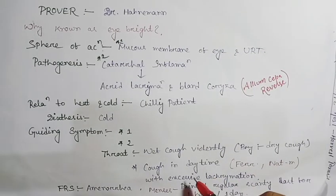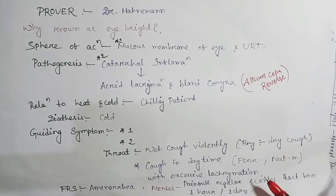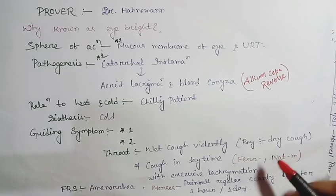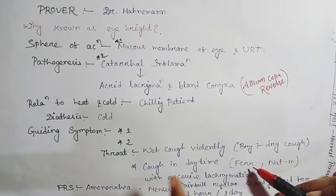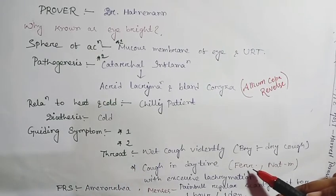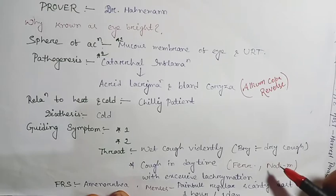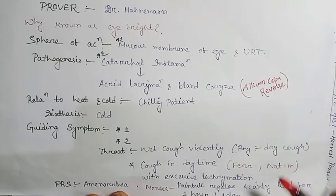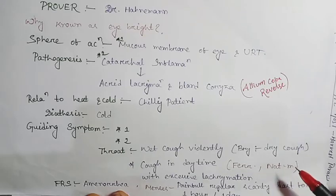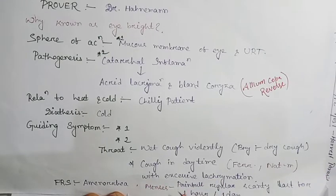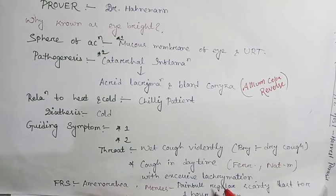The cough commonly occurs in daytime, like Pulsatilla and Natrum muriaticum, but they have differences. In Pulsatilla, the daytime cough is ameliorated when they sleep or lie down. Natrum muriaticum is for hot patients with salt cravings. In Euphrasia, the cough is so violent that excessive lacrimation occurs from the eyes.